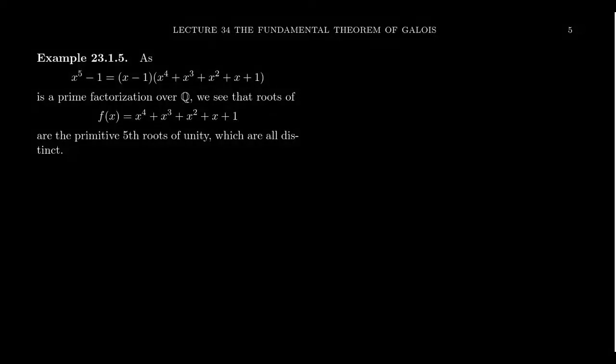Consider the very important polynomial x to the 5th minus 1. Why is it so important? Well, the roots of this polynomial—viewing this as a rational polynomial—are exactly the 5th roots of unity, viewed as complex numbers, of course.